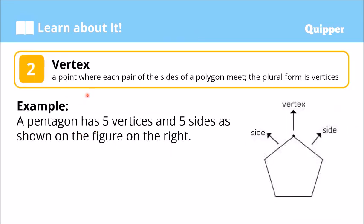We also have what we call a vertex. Vertex is a point where each pair of the sides of the polygon meet. The plural, when there are many, is called vertices. When there are two sides of the polygon combined, the point where they meet is called a vertex.